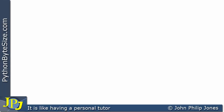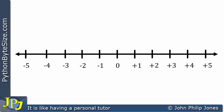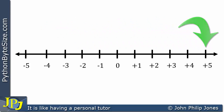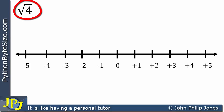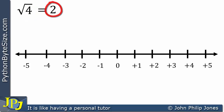Let's consider the real number line that we looked at in the previous video. I've drawn it here on this slide going from minus 5 to plus 5, though of course the real number line is much bigger than this. Let's consider the square root of 4. We know the square root of 4 equals 2, and I can mark where 2 is on the real number line with an x as you can see here.